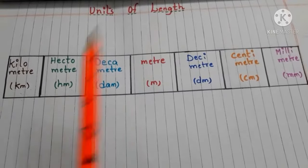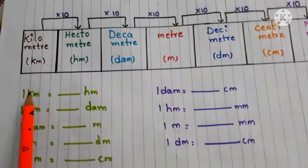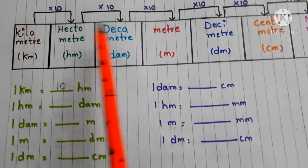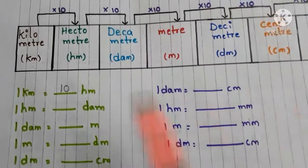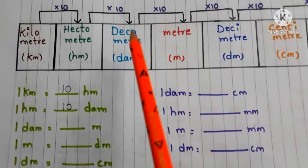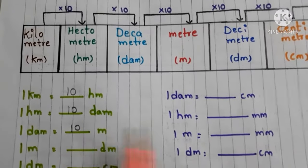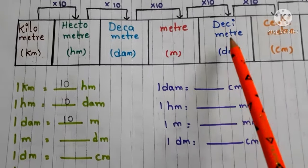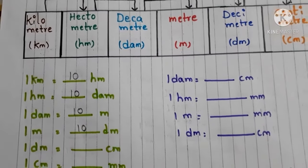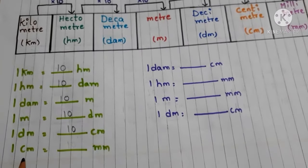To convert kilometers into hectometers, multiply by 10 — so 1 kilometer equals 10 hectometers. To convert hectometers into decameters, multiply by 10 — 1 hectometer equals 10 decameters. To convert decameters into meters, multiply by 10 — 1 decameter equals 10 meters. To convert meters into decimeters, multiply by 10 — 1 meter equals 10 decimeters. Likewise, 1 decimeter equals 10 centimeters, and 1 centimeter equals 10 millimeters.